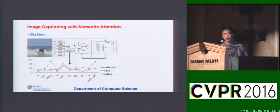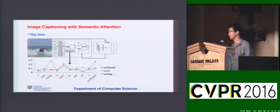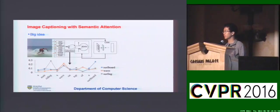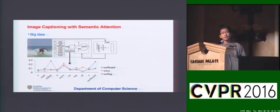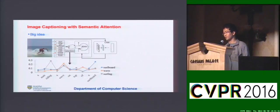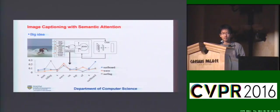Our idea is to combine these two approaches. Given an image, you can see we first generate a bunch of relevant attributes from the image. At the same time, this image is also supplied to a convolutional neural network to extract the global representations. Next, both of them are supplied to the recurrent neural network to generate the final caption.